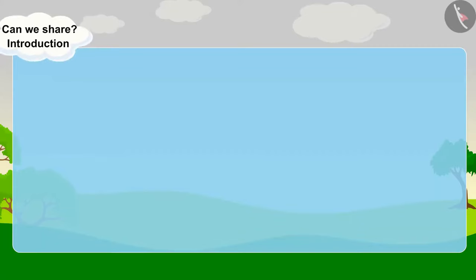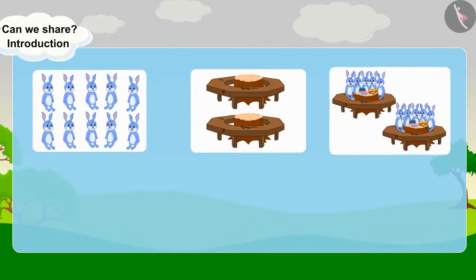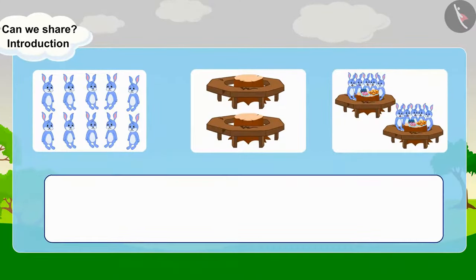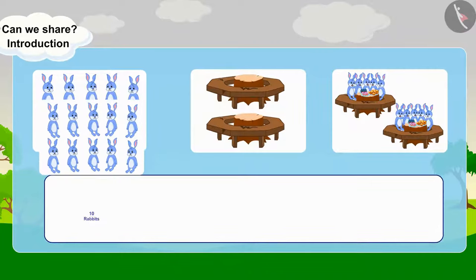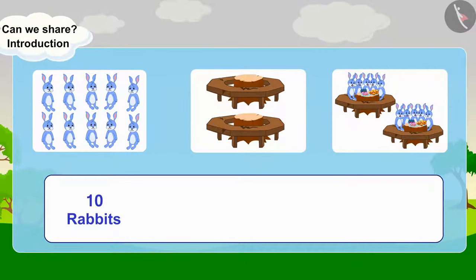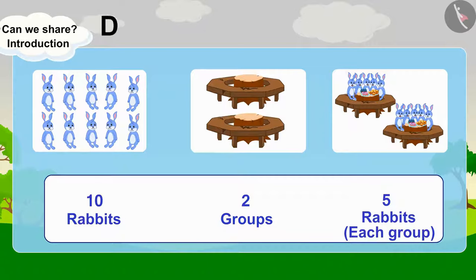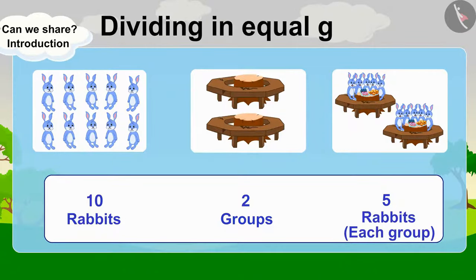Now, let us look at it in another way. A total of ten rabbits are seated in two groups, each group having five rabbits. It is called dividing in equal groups.